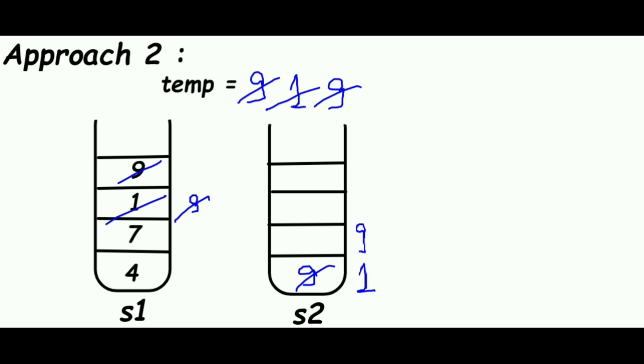Now we take 7. Since 7 is less than 9, we will push 9 from stack S2 to stack S1, and then 7 will be pushed to stack S2.